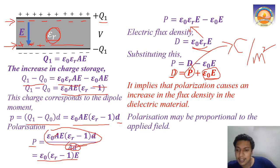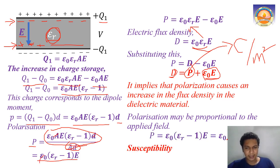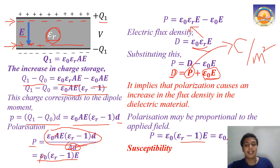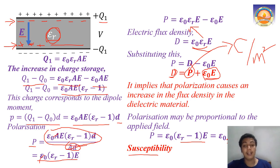In most materials, polarization is proportional to the applied field: P = ε₀·(εᵣ - 1)·E. The quantity (εᵣ - 1) is replaced by χ (chi), called dielectric susceptibility: χ = εᵣ - 1. This represents how proportionally the polarization responds to the applied electric field intensity.